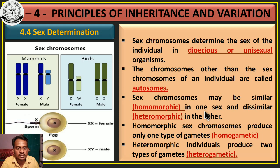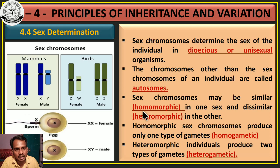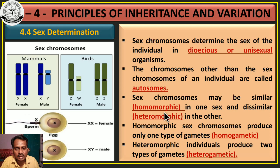The sex chromosomes are classified into two types: homomorphic or heteromorphic. Homo means same, morphic means morphological structure. Hetero means different, morphic means morphological structure. Homomorphic means the chromosomes have a similar morphological structure. For example, in humans, females have two X chromosomes and both X chromosomes are similar in structure. So these individuals produce homomorphic gametes.